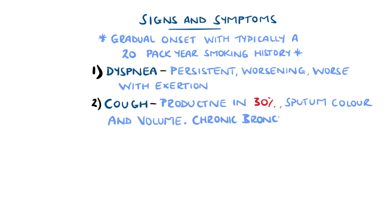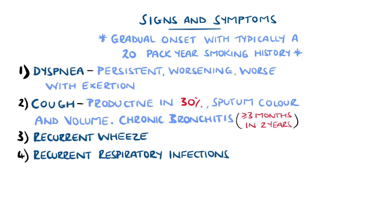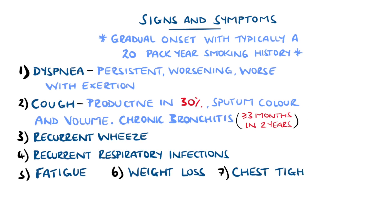Traditionally, for a diagnosis of chronic bronchitis to be made, the cough must be present for more than 3 months in 2 consecutive years, with no other explanation. Recurrent wheezing and respiratory tract infections, fatigue, weight loss, and chest tightness are other common findings.